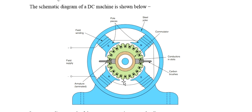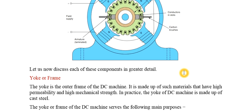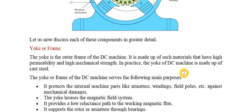The armature is the rotating device in a DC machine, placed inside the core. You can see conductors in the slots — these are the armature conductors or armature winding. Carbon brushes are used for converting alternating current into direct current.